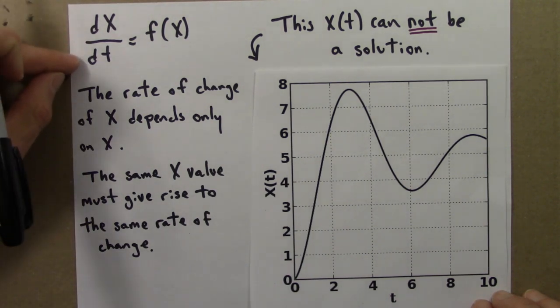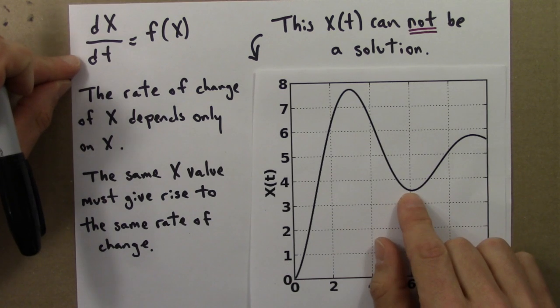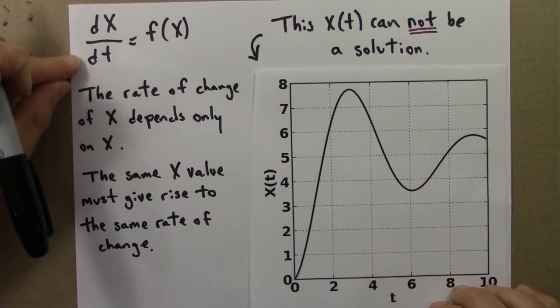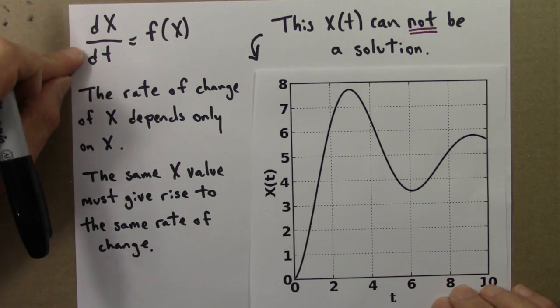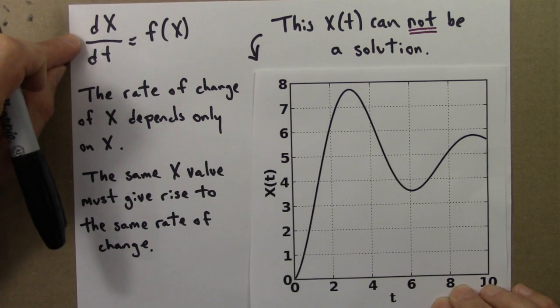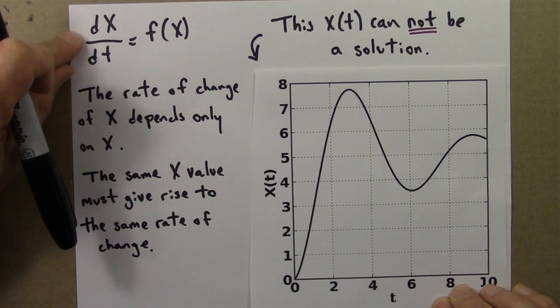Differential equations of this form can never have oscillatory solutions. So although these are important in engineering and science, they're a little bit boring from a dynamical systems point of view. A particular x curve can only increase or only decrease or be at a fixed point. It can never turn around.